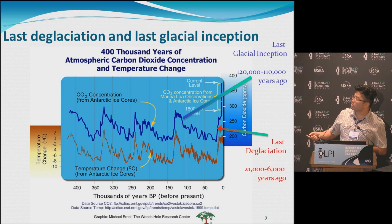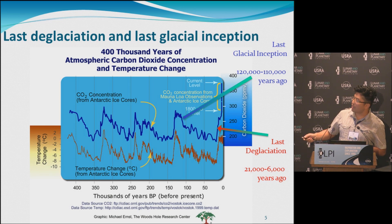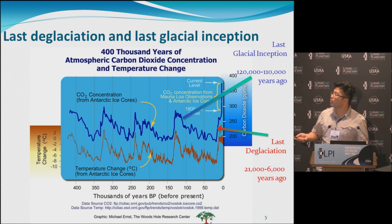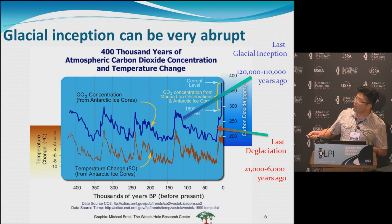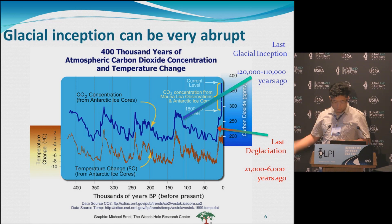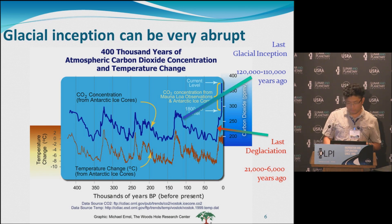This is called the last deglaciation, from 21,000 to 6,000 years ago — that's the time when we got out of the glacial period. And then there is the last glacial inception, about 120,000 to 110,000 years ago. I want to point out that glacial inception can be very abrupt. The common idea that it takes a long time to build a glacier — actually, it's not. It can be really fast.